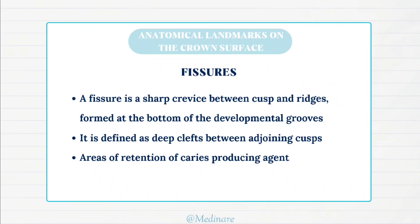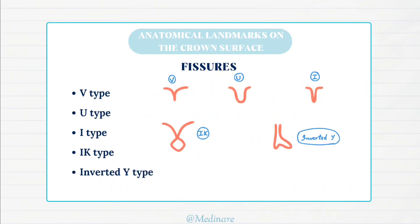Fissures. A fissure is a sharp crevice between the cusp and ridge formed at the bottom of the developmental grooves. It is defined as a deep cleft between the adjoining cusps. They are areas of retention of caries-producing agents. The fissures can be of various types such as V-type, U-type, I-type, IK-type and inverted Y-type. Since these areas can hold a lot of caries-producing agents, we can prevent them by sealing the pits and fissures using pit and fissure sealants.